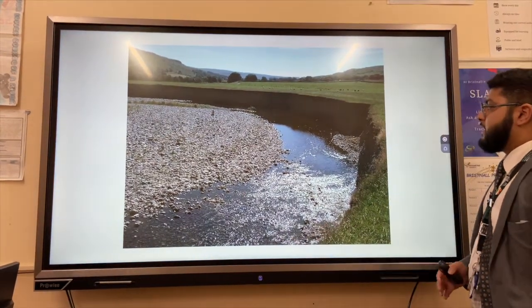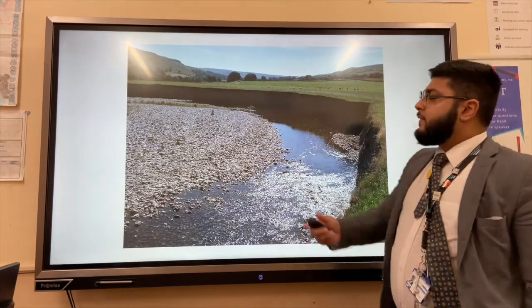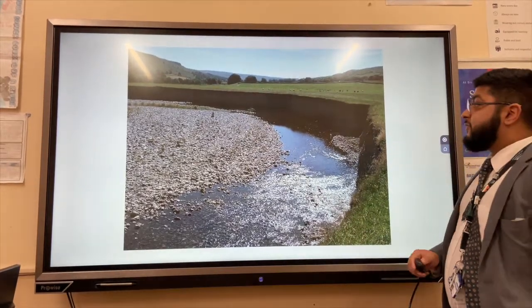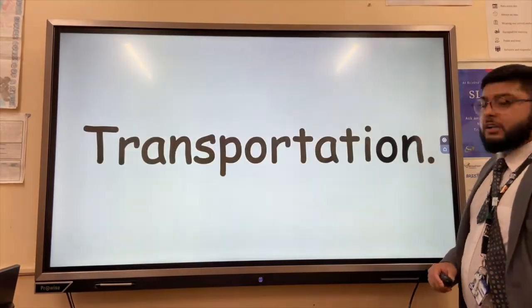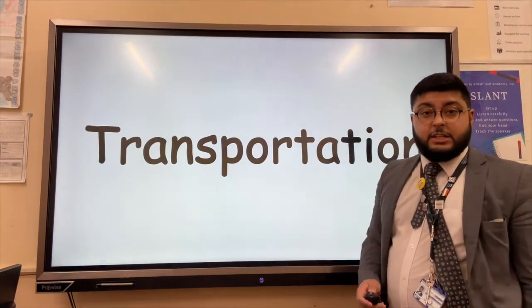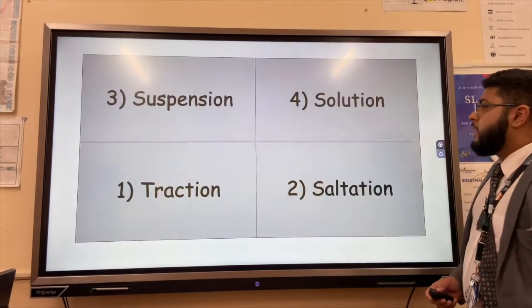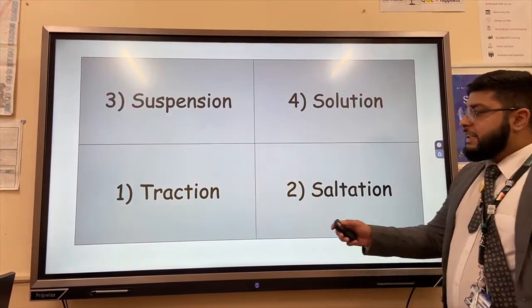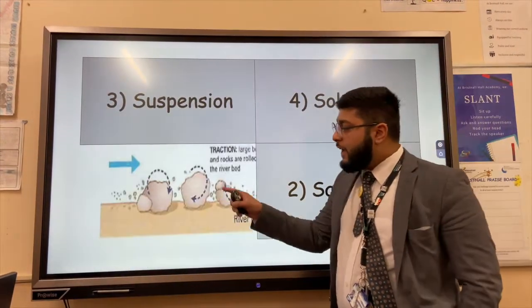We've also got meanders on the river that have created a river cliff, where the velocity of the river is faster on the outside of the meander bend. Transportation is another fluvial process. The first type is traction, where large boulders roll along the bed of the river, like a tractor.